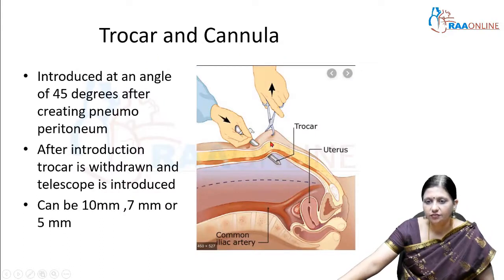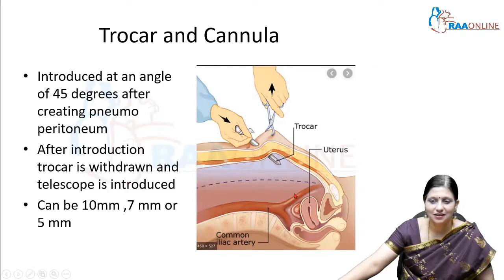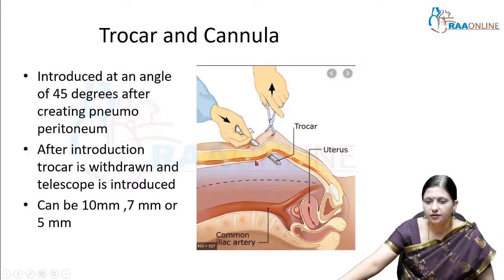To introduce this trocar and cannula, you have to lift the abdominal wall and it should be introduced at an angle of 45 degrees. If we were to introduce it directly, we can injure the common iliac artery or the external and internal iliac artery. So lift the abdominal wall and push it obliquely, not directly. After the trocar and cannula has been inserted, the trocar is withdrawn and the cannula is left in place, through which the laparoscope is introduced.